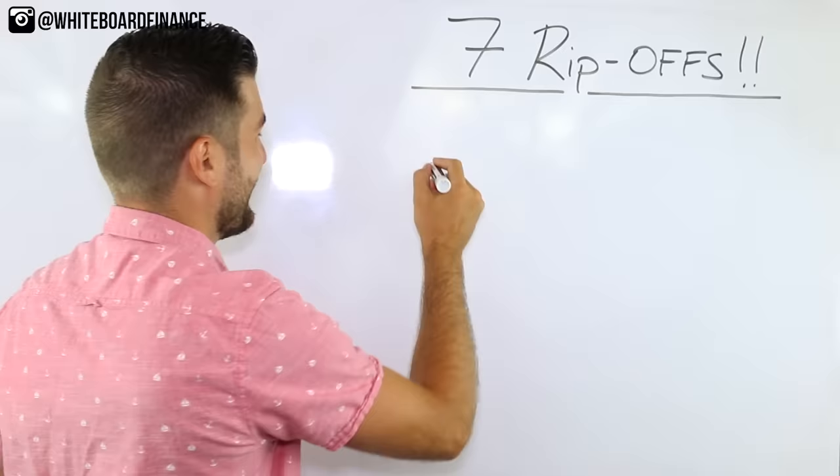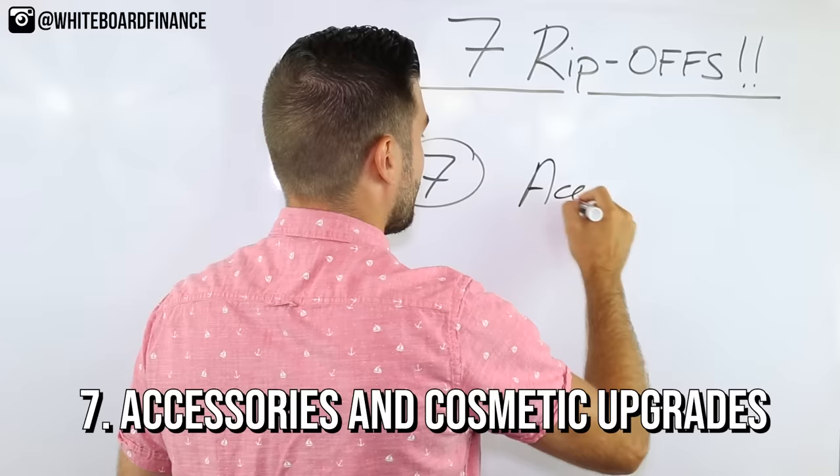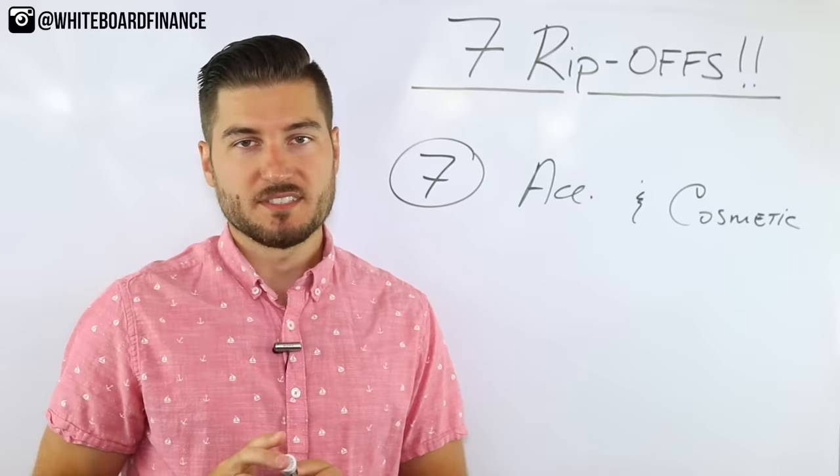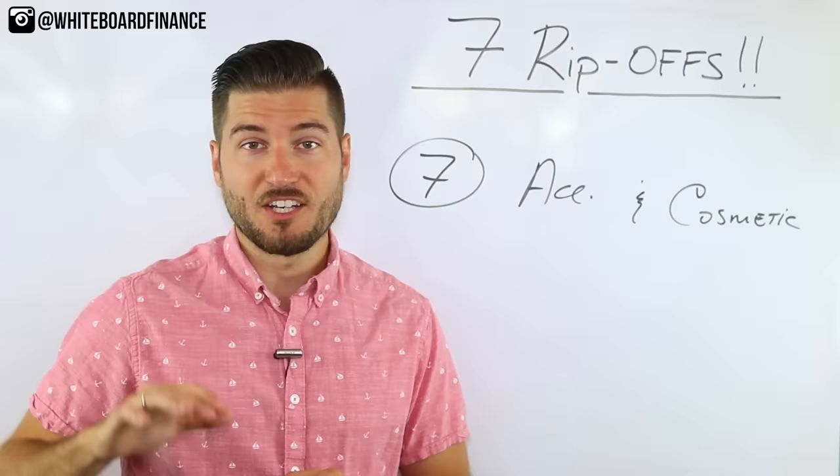And number seven, this is the last one, and there's actually multiple items within number seven, but this is for accessories and cosmetic upgrades. This is one of the biggest profit centers of the dealership.